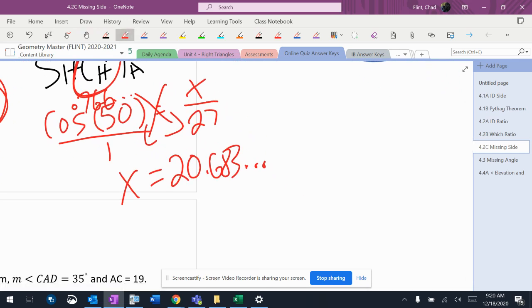Nearest integer, that means whole number, no decimals, which means that's going to be 21.